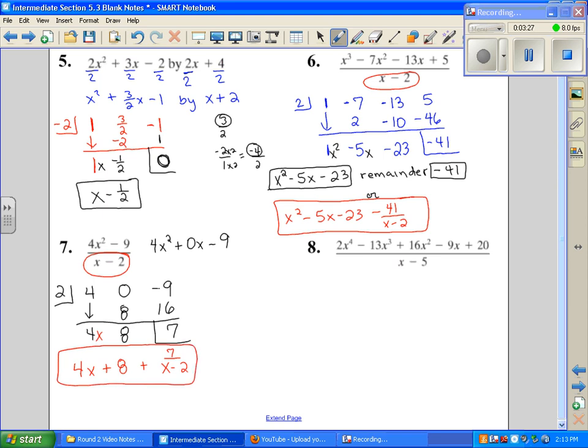Number eight, we're going to do the same way. Five, x to the fourth, third, second, x to the first, constant. So it's already in order, we just need to drop the coefficients: two, negative thirteen, sixteen, negative nine, and twenty.